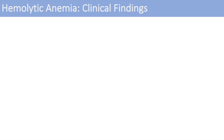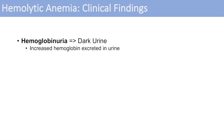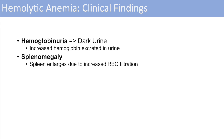Now that we know the diagnostic markers, what are the clinical findings — the symptoms a patient experiences with hemolytic anemia? One is hemoglobinuria, which is dark urine, due to increased hemoglobin excretion in the urine. Another is splenomegaly — the spleen enlarges due to increased RBC filtration. Splenomegaly may actually be a cause of hemolytic anemia, with increased destruction of red blood cells due to an enlarged spleen.